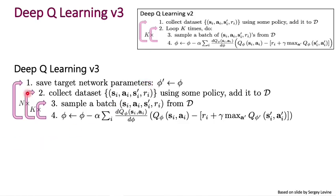And now we have one additional loop on the outside, which involves occasionally saving target network parameters. So we're going to save target network parameters, then collect a data set, then optimize several times using many mini batches on the labels provided using that target network. And we're going to repeat that process,